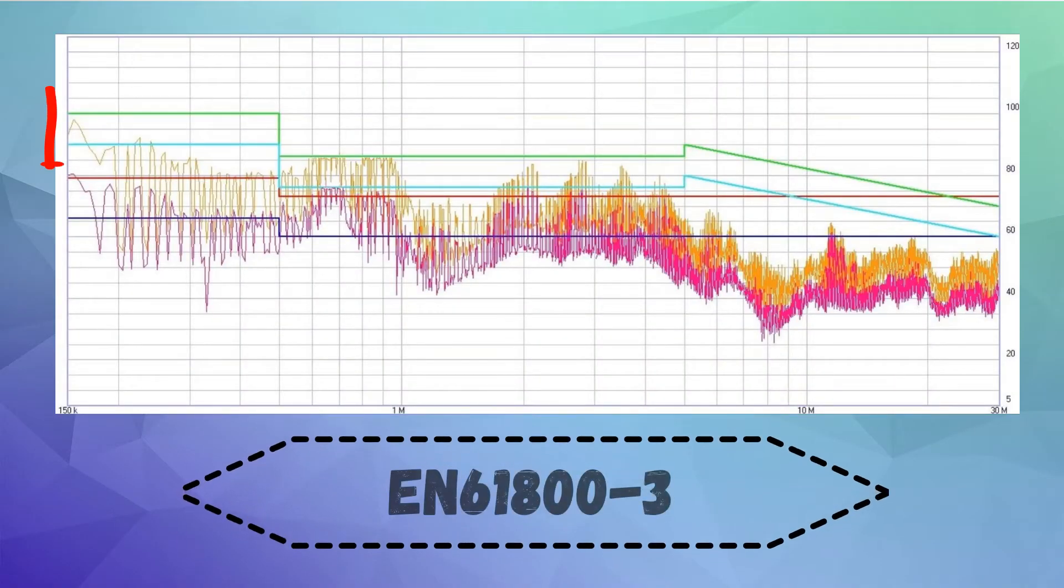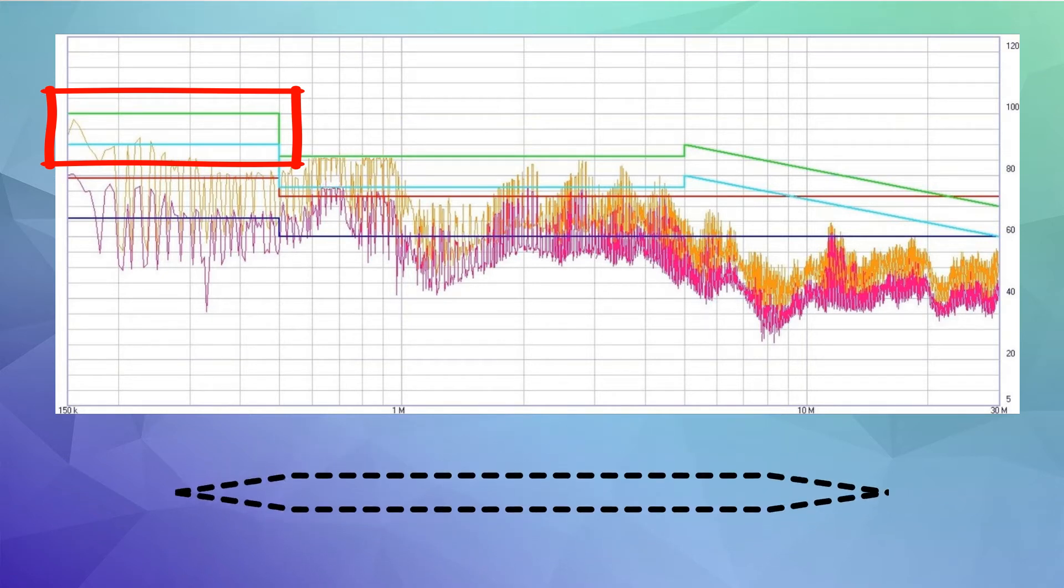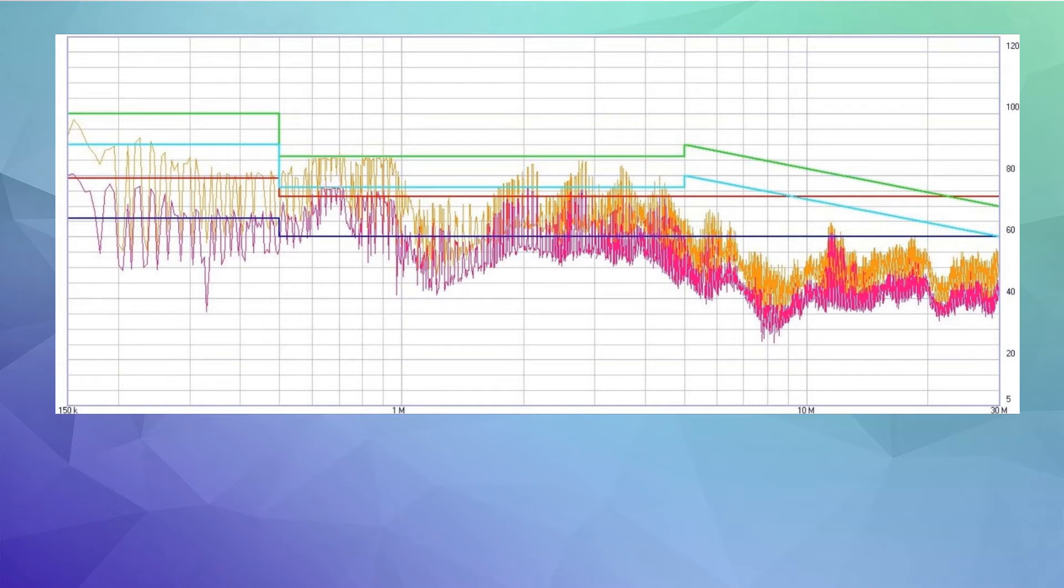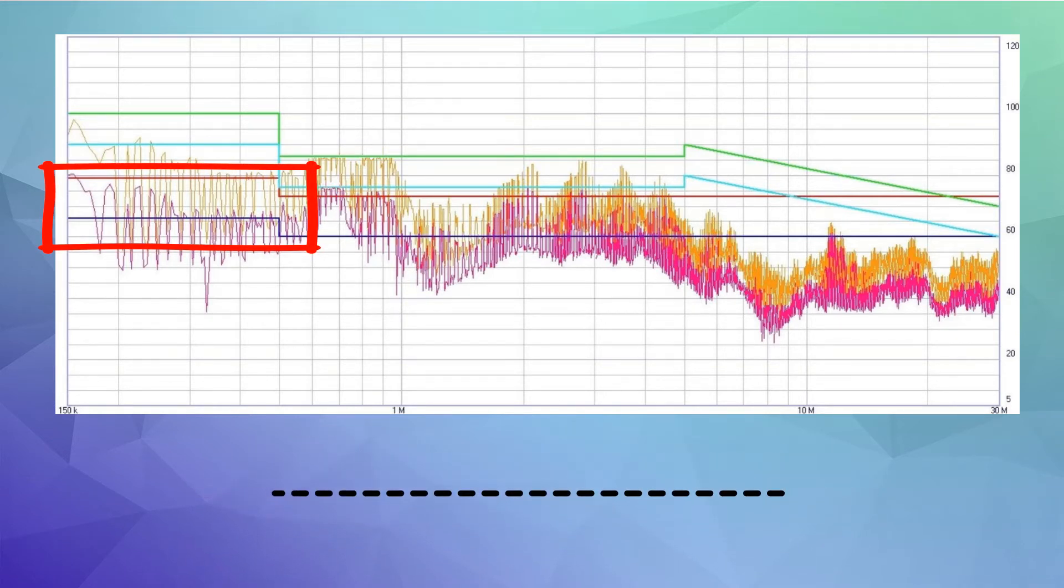These are the limits for a variable frequency drive used in an industrial environment, taken from the EN 61800-3 standard. And these are the limits for an entire industrial machine, from the EN 61000-6-4 standard.